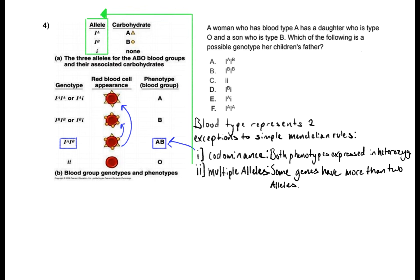So our question asks a woman who is blood type A has a daughter who is type O and a son who is type B. Which of the following is a possible genotype of her children's father? So right off the bat before I even think about answering that last part we see a lot of information.